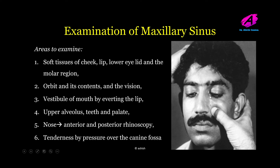Examine the orbit and its contents and check the patient's vision, as maxillary sinus disease may erode the inferior orbital wall and present with orbital conditions. Examine the vestibule of the mouth by everting the lip — there may be fullness or erosion due to maxillary sinus disease, mainly malignancy. The upper alveolus, teeth, and palate should be examined for any oroantral fistula or palatal bulge due to a mass in the maxillary sinus. Anterior and posterior rhinoscopy of the nose should be done to check for discharge or mass arising from the maxillary sinus. Tenderness is checked by pressing over the canine fossa, with one maxillary sinus examined at a time.